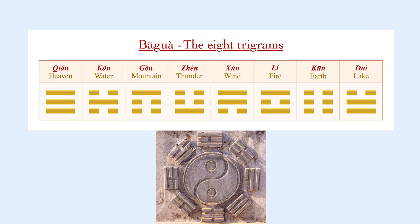The six lines together create a Gua or hexagram, and each horizontal line is a Yao. Here is a chart for the basic Ba Gua. The first one on the left is Qian, which means heaven. The second is Kan, which means water. The third is the mountain, Gen. The fourth is thunder, Zhen. The fifth is wind, Xun. The sixth is fire, Li. The seventh is earth, Kun. And the last one is lake, Dui. That's the basis of all 64 combinations, because eight times eight is 64.